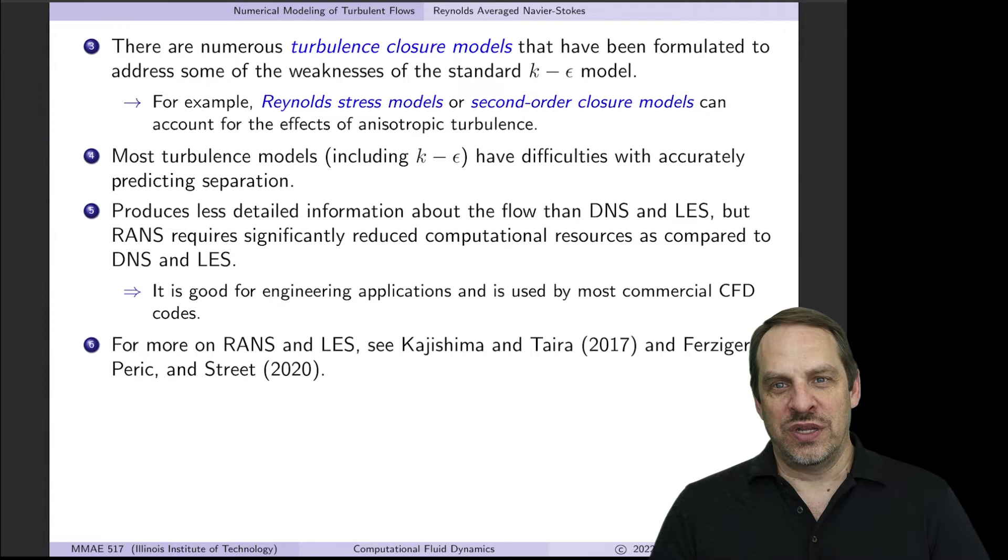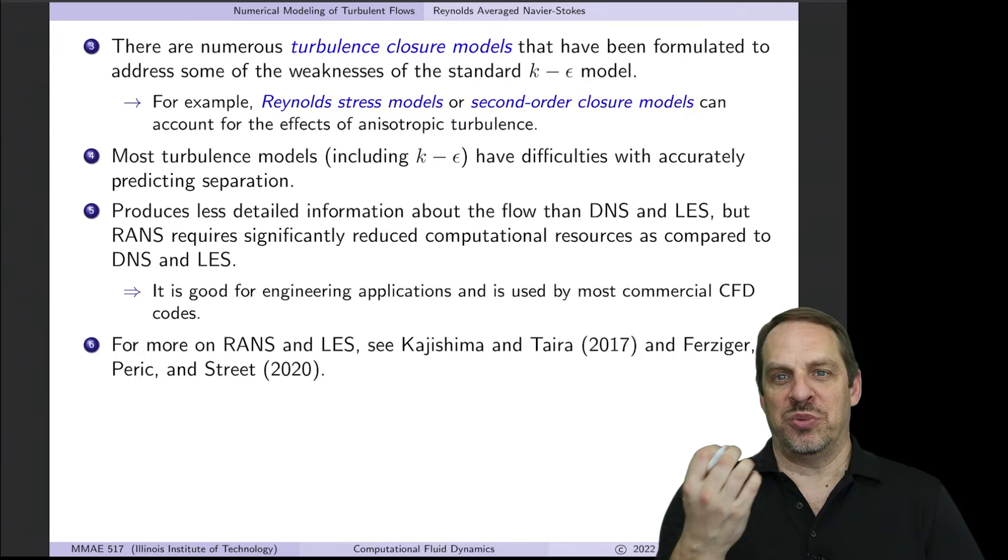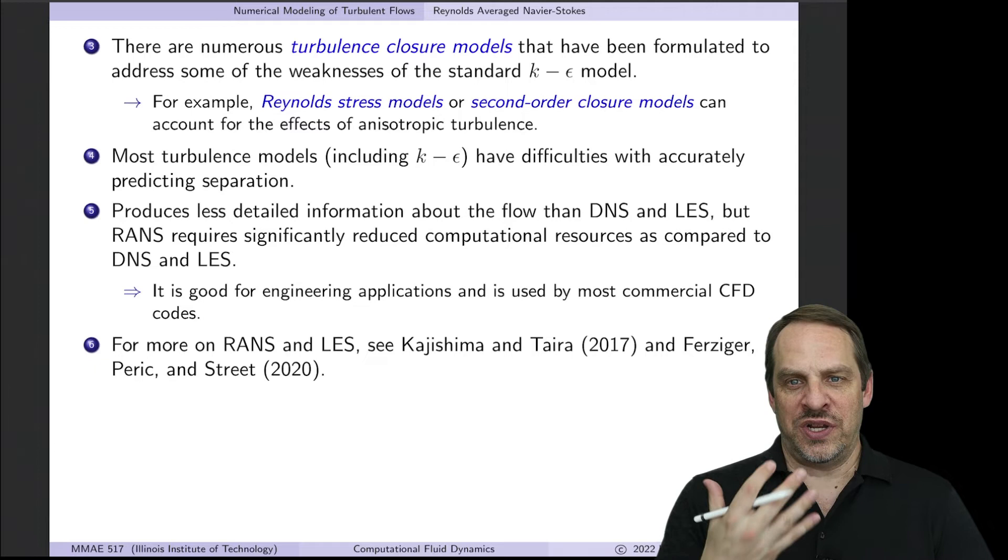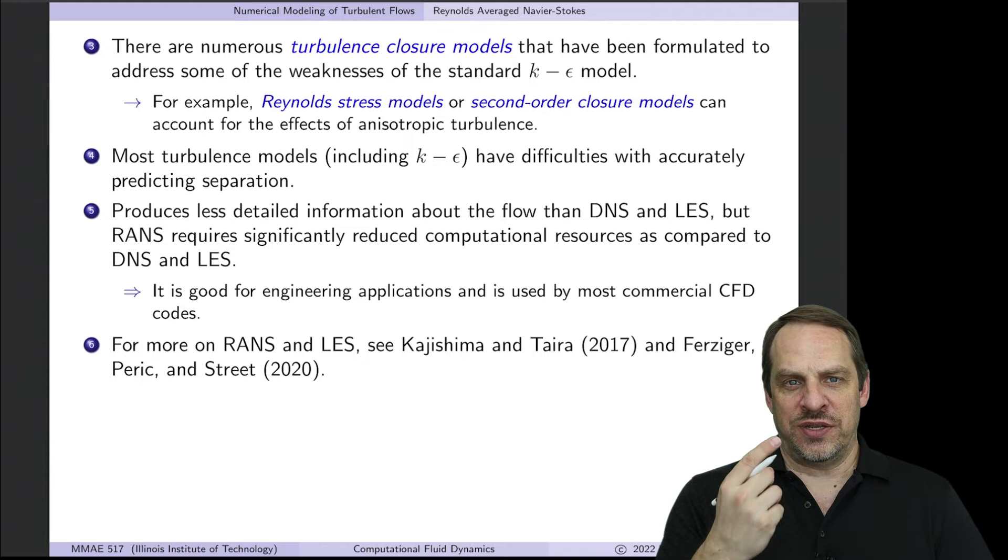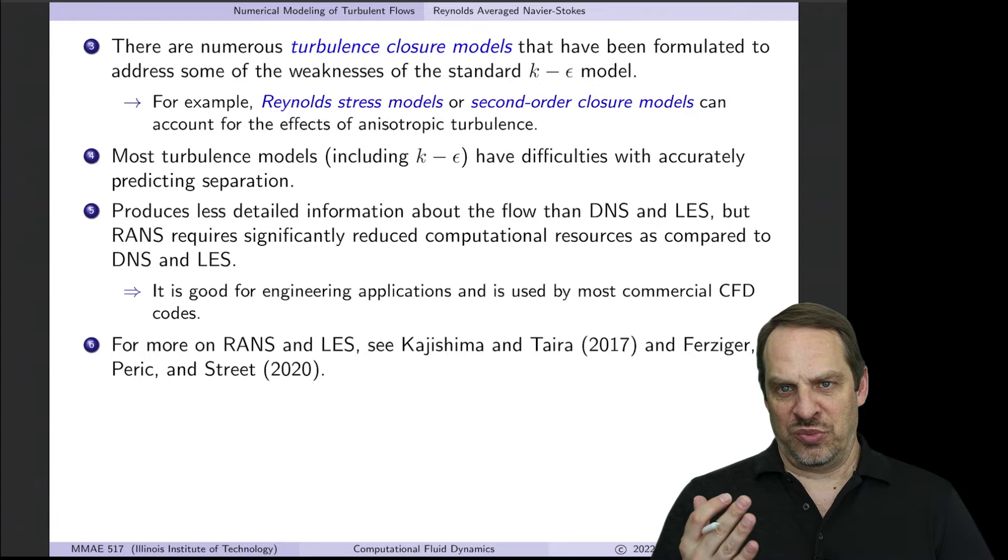There's a whole host of turbulence models available. The reason why we need so many is because none of them are right. Some are simpler, some are harder, some are more flexible. Some require more computation, some less. Some are more physically appropriate for certain circumstances. This gets very complex, and there's no silver bullet. There's not a single RANS model that applies for all turbulent flows. So we argue about which models are best for certain types of flows under certain Reynolds numbers and regimes. There's always room for improvement with RANS.